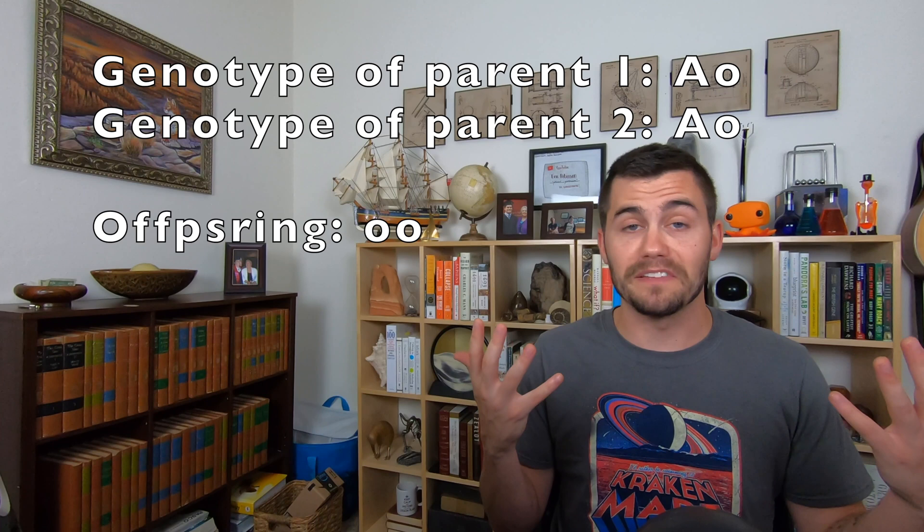This means that you may pass on an allele for a trait that you yourself don't express. Two parents who are both type A blood could theoretically have a child whose blood type is O, for example.